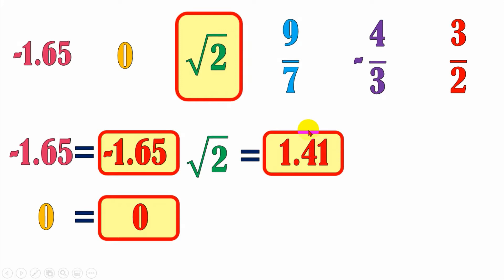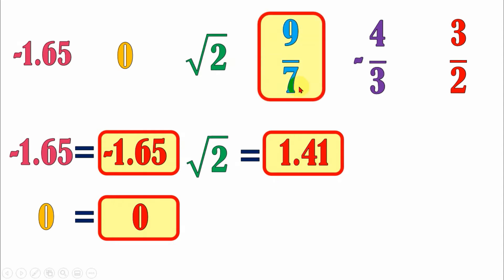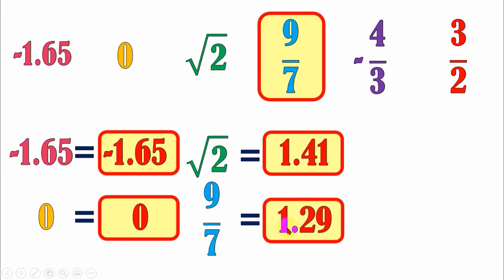How did we get 1.41? Remember, I already taught you getting the principal square root of a certain number. Since 2 is not a perfect square, this is irrational. To get its principal square root, you have to use a calculator — type in square root of 2, and that is equal to 1.41. Then next, let's have 9 out of 7. 9 out of 7 is equal to 1.29. You may refer back to the previous video on how to change a fraction into its decimal form, or you may directly type 9 divided by 7 into your calculator, which gives you 1.29.